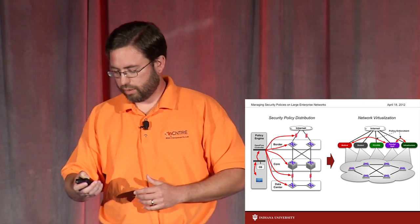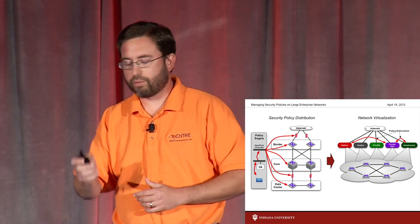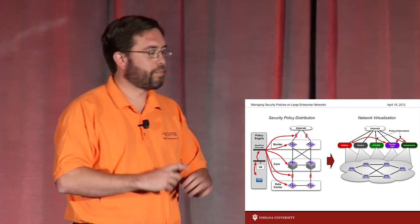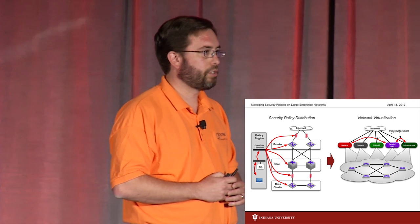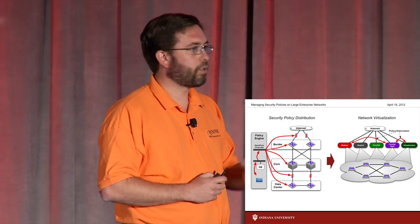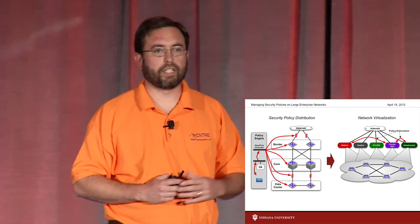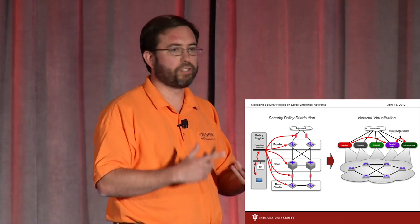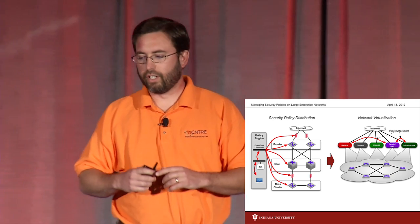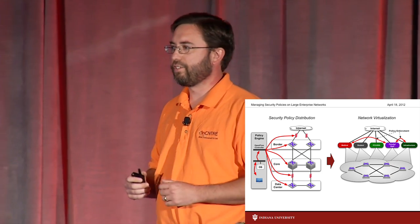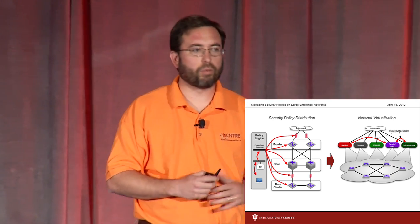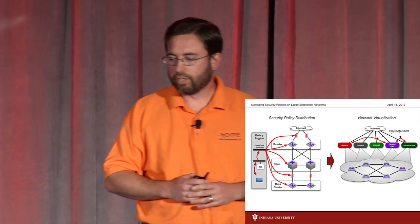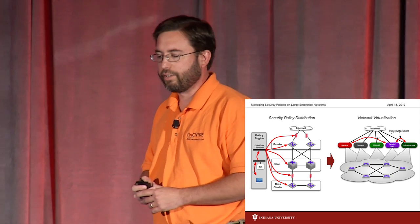That's where you end up with the diagram on the right: the idea of virtual networks that span physical space and control security policy. That starts looking a lot like the problem set in a large multi-tenant data center. The difference is we have not just hypervisor switches, but physical switches and wireless access points — physical devices we cannot control the movement of. They randomly move around the network and we have no control over that until it happens. But the problem set is largely the same.